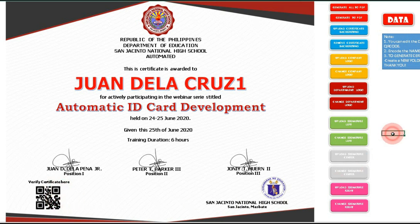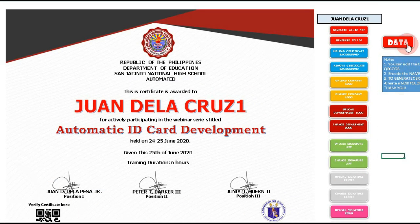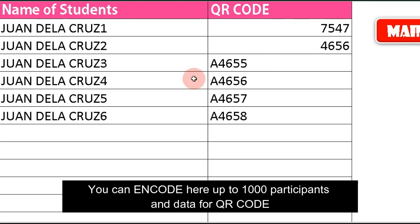Use the data tab to encode the name of the participants and the data for the QR code.